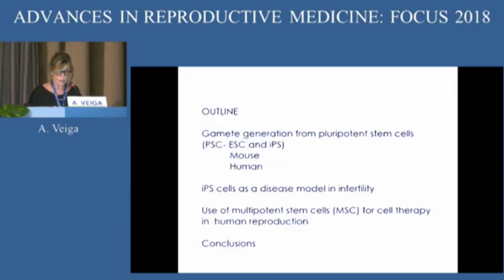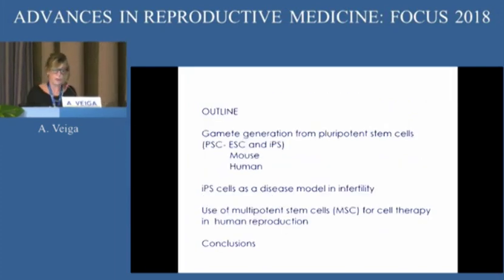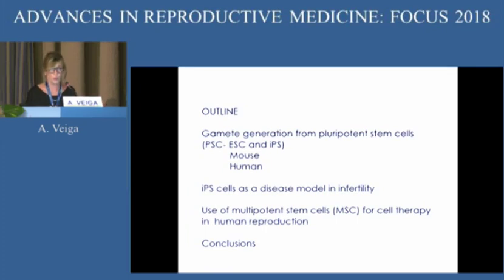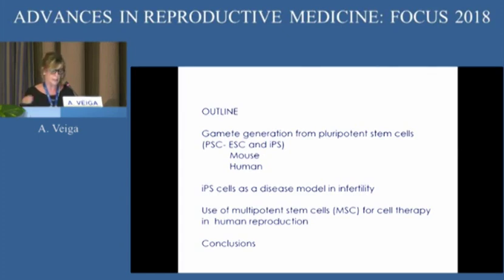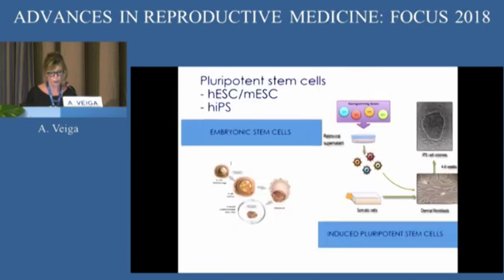These are my disclosures, and this is the outline of my presentation. I will first talk about gamete generation from pluripotent stem cells, focusing on pluripotent stem cells in the first part of my talk, then move to other stem cell types at the end. The second part will cover IPS cells as a disease model in infertility, and at the end I will cover real applications of multipotent stem cells for cell therapy in human reproduction.